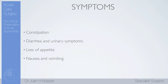Many patients will have constipation, as the local inflammatory process causes a slight paralysis of the bowel in that area. Patients with a pelvic appendix — where the tip lies down into the pelvis — might touch or irritate the rectum and present with a bit of diarrhea, which can be confusing. It might also touch the bladder, causing urinary symptoms such as dysuria and frequency.